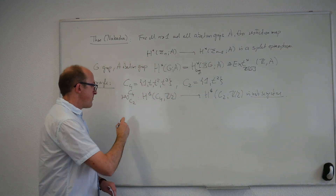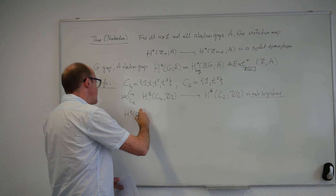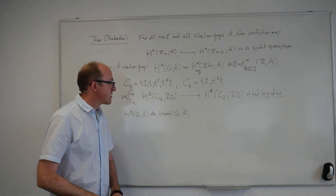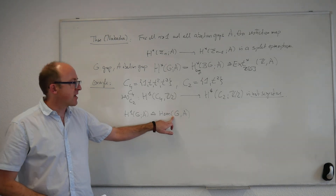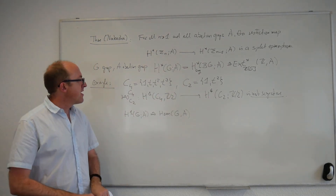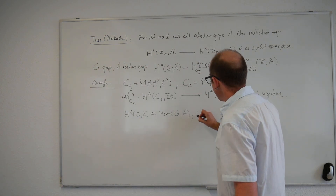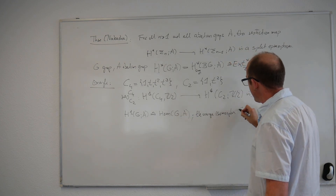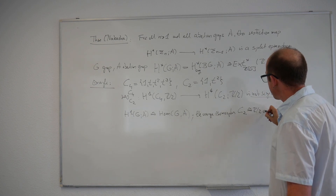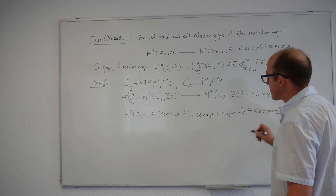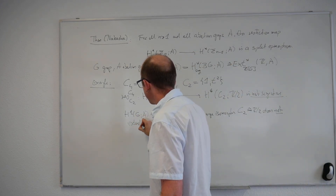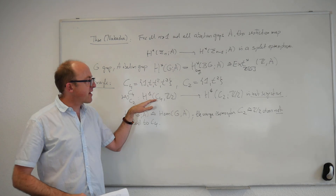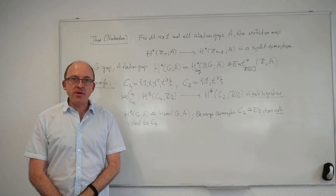How can you see that? In general, H₁(G; A) is isomorphic to the group homomorphisms from G into A. Since A is abelian, this factors over the abelianization. Now, the unique isomorphism between C2 and Z/2 does not extend to C4. So in this particular example, both of these groups are non-zero — they are abstractly isomorphic cyclic groups of order 2 — but the restriction map is the zero map.